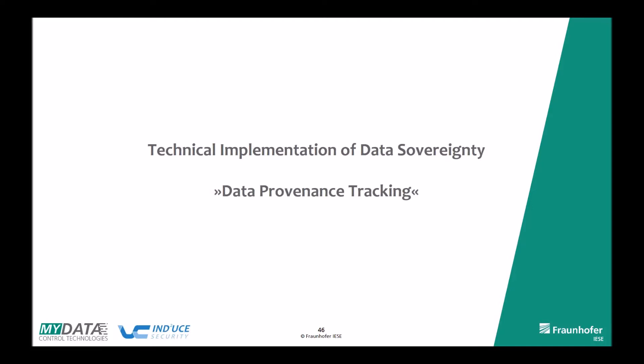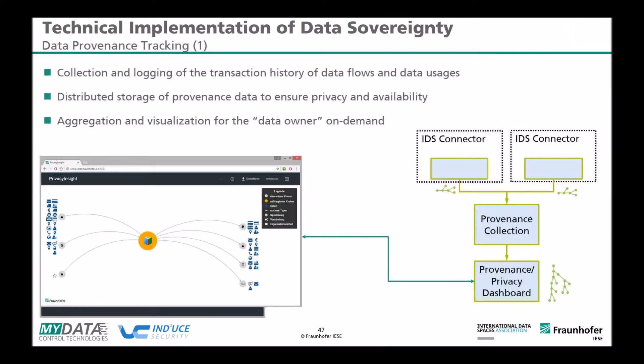That is the end of Gerd's section. Thank you, Gerd, for presenting label-based usage control, and thank you, Andreas, for the MyData Control Technologies. These are two proactive enforcement technologies that interact with data flows to prevent or allow flows in the system. The data provenance tracking technology is the retrospective part — it is not enforcing, but collecting what has happened in the system, locking and recording all transactions and data flows to a distributed storage to ensure privacy and availability.